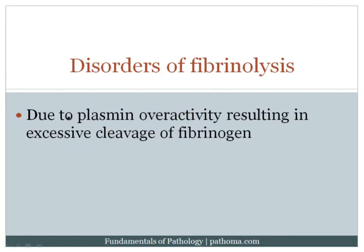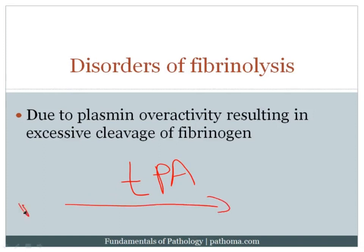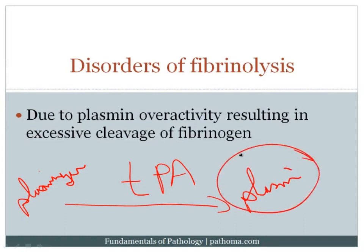The next set of disorders are disorders of fibrinolysis. Fibrinolysis is the very end stage of coagulation — once a thrombus is formed, the final step is removing it. This removal occurs via plasmin. We activate a serum protein called plasminogen and convert it to plasmin. The enzyme that does this conversion is TPA — tissue plasminogen activator. Plasmin is the key molecule involved in fibrinolysis.